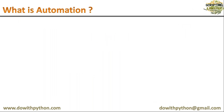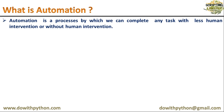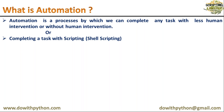Simply, automation is a process by which we can complete any task with less human intervention or without human intervention. Sometimes you need human intervention and sometimes you don't. We will see when human intervention is required and when it is not. Ultimately, automation is completing a task with scripting — shell scripting, Python scripting, Ruby, Perl — whatever fits the requirement and situation.